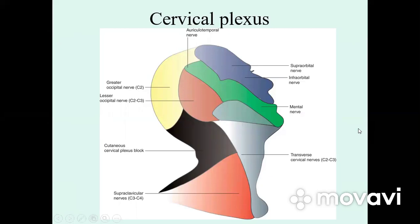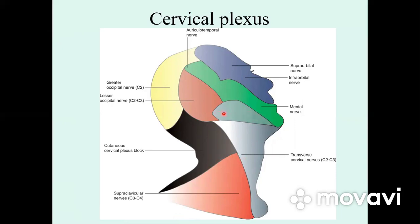In this picture we can see the skin areas innervated by the cervical plexus: the lesser occipital nerve, transverse cervical nerve, supraclavicular nerve, and greater auricular nerve.